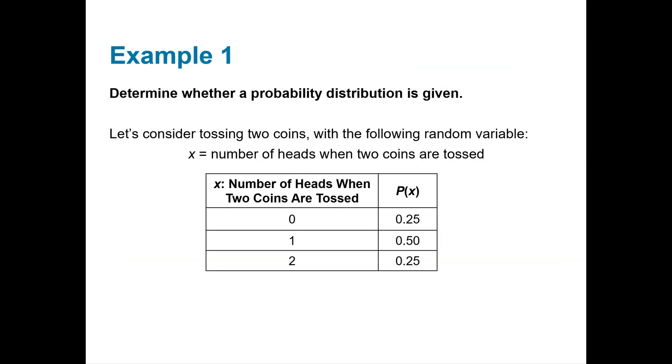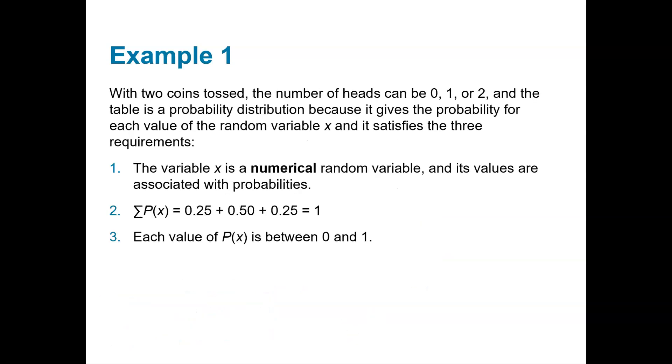They give us this table, and the question is, determine whether a probability distribution is given. First, is the random variable x numerical? These values are numerical. Next, does the sum of all the probabilities equal 1? We sum up these probabilities—0.25 plus 0.5 plus 0.25—and we do get 1. Last, is each probability between 0 and 1? Yes, this is a probability distribution.